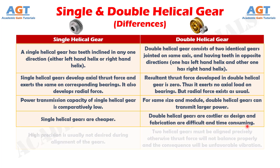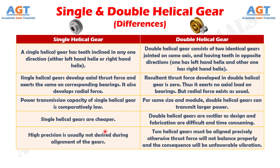Number 5: in single helical gears, high precision is usually not desired during alignment of the helical gears. Whereas, in double helical gears, the two helical gears must be aligned precisely; otherwise the thrust force will not balance properly, and the consequence will be unfavorable vibration.